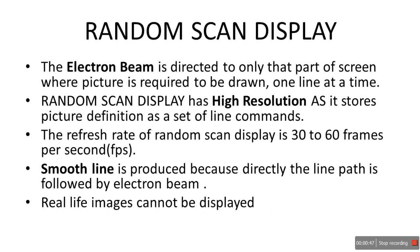It stores the picture as line commands. Third point: the refresh rate of random scan display is 30 to 60 frames per second. Fourth point: smooth lines are produced because the line path is directly followed by the electron beam. Fifth point: real-life images cannot be displayed on random scan display — that is one major disadvantage.